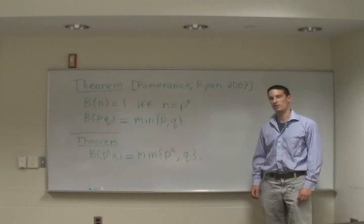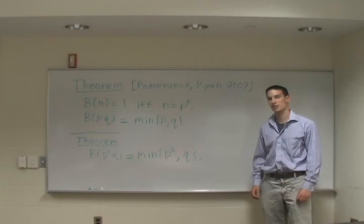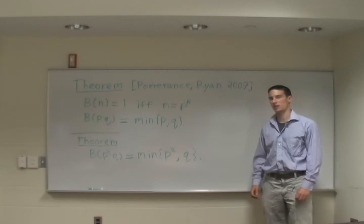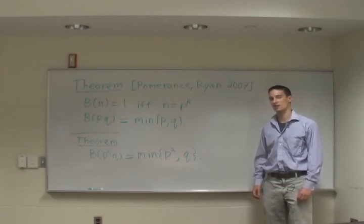In the next section of our paper, we prove this by considering each of the 64 divisors of x to the p squared times q minus 1. For the rest of the paper, we consider b of p times q times r for primes p less than q less than r, and it's significantly more complicated than these earlier cases.